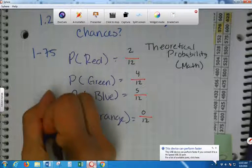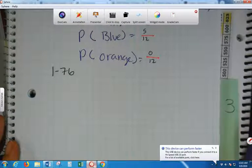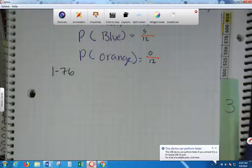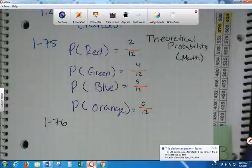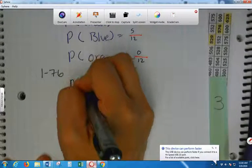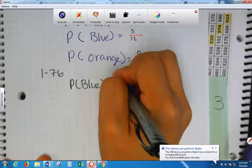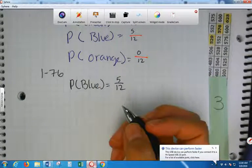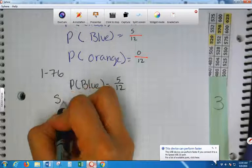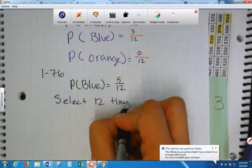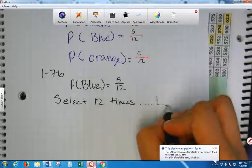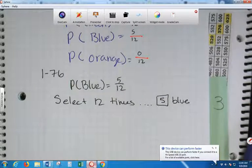Okay. We're going to do one dash seventy-six. If you were to select one block from the bag twelve times, replacing the block you drew between each selection, how many of those times would you expect to have selected a blue block? So, what's the probability of blue? Five twelve. Now, if I were to select twelve times, how many would be blue? Five. Because it's five out of twelve.